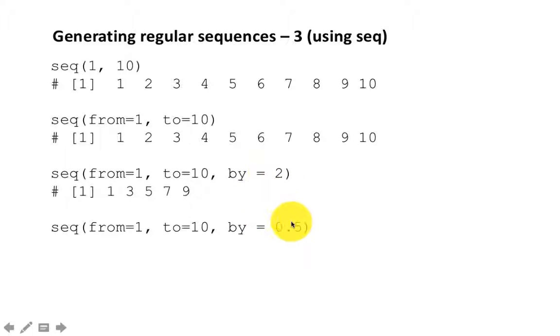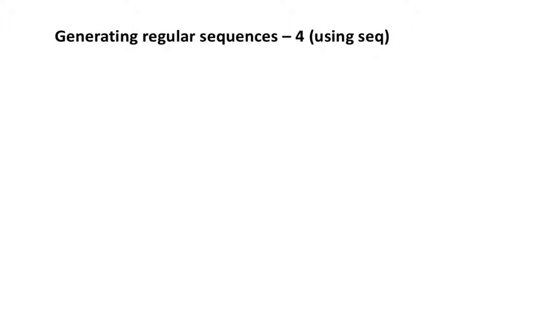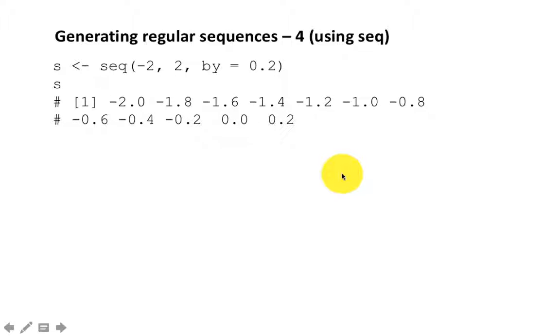You can also increment by fractional values. In fact, you can even change by negative values, if you like. Your starting number can be negative. So you can say go from -2 to 2, increment by 0.2. So you're going to get -2, -1.8, et cetera. All combinations are possible there.